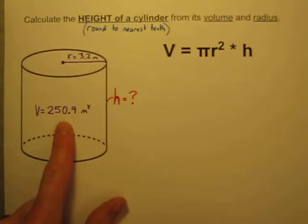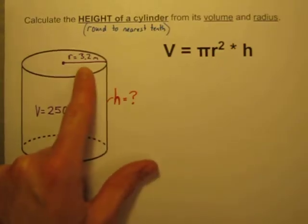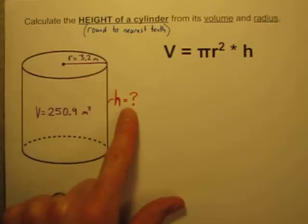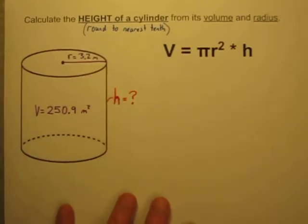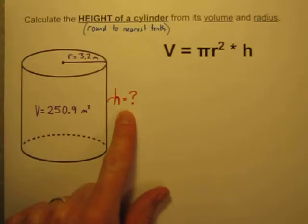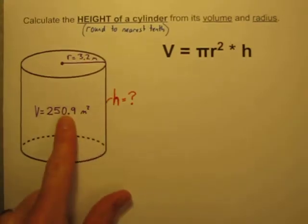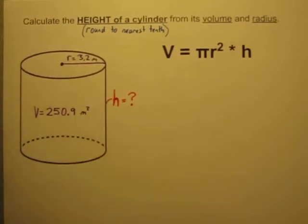Sometimes a problem will give you the volume of a shape, and maybe it'll tell you one of the lengths, but it'll ask you to work backwards to figure out what another length is. So in this video I'm going to show you how to calculate what the height of a cylinder has to be if you're given the volume and you're given the radius of that cylinder.